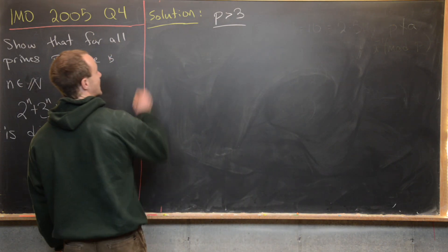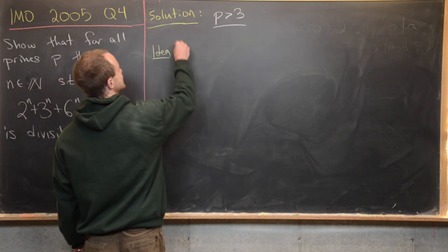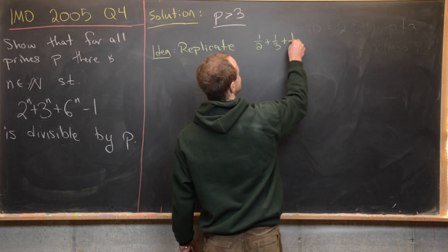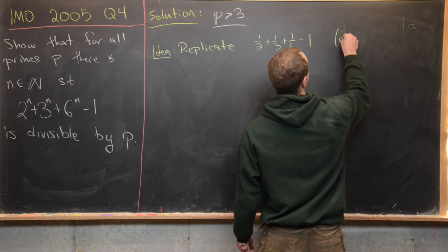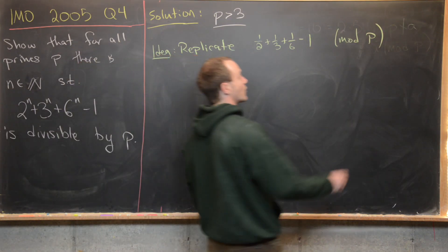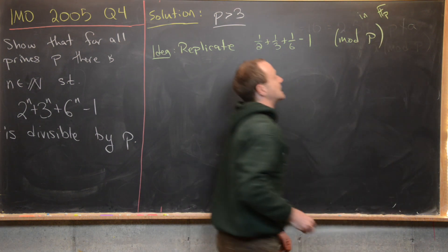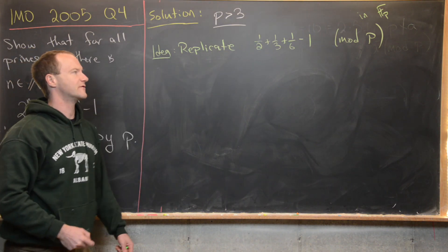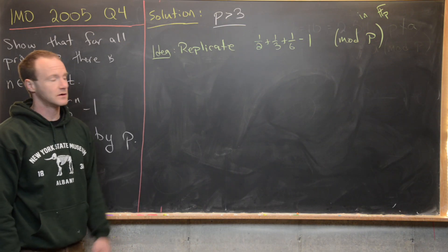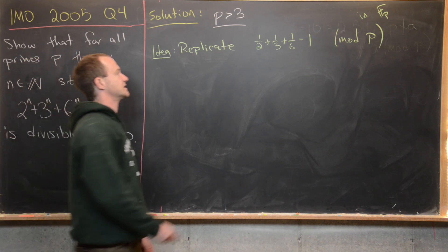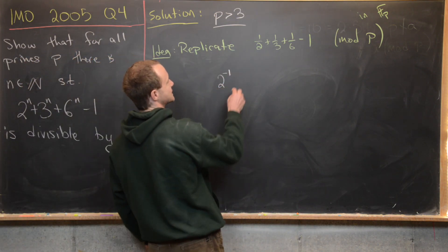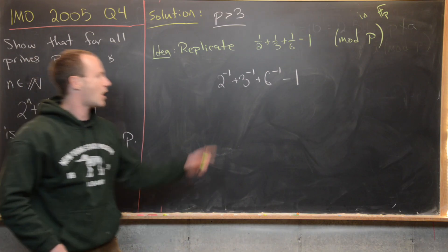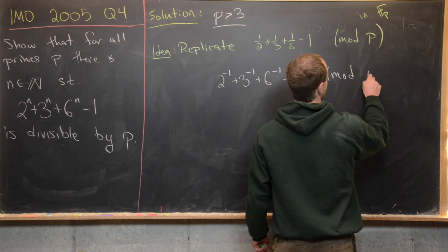Let's point out what the idea is. The idea is to replicate this equation—1/2 + 1/3 + 1/6 - 1—mod p, or in other words in the finite field with p elements. We could call that F_p if we wanted to. Generally we don't write fractions modulo p or even in F_p, although we could. Generally we write these as negative exponents. So what we want to look at is 2^(-1) + 3^(-1) + 6^(-1) - 1, and again all of this is happening mod prime p.